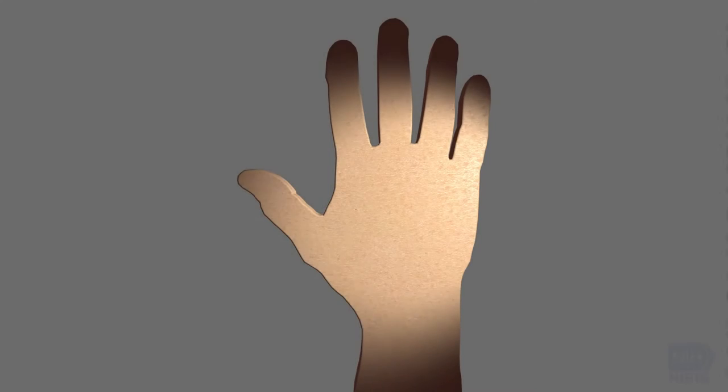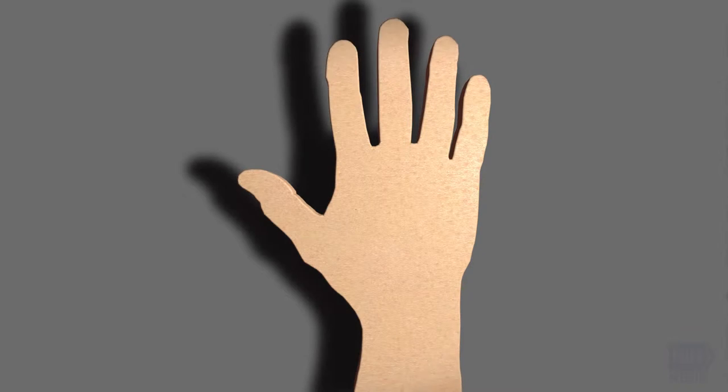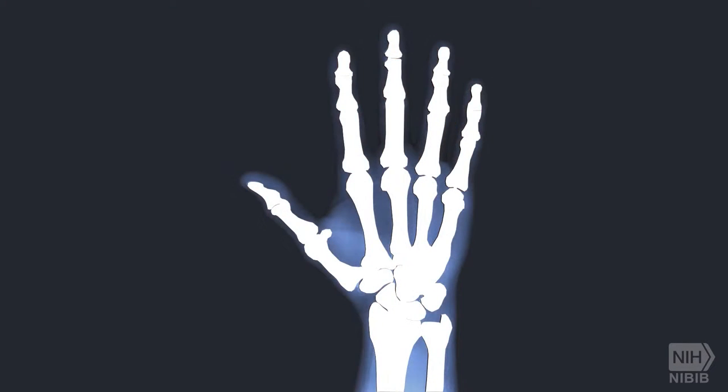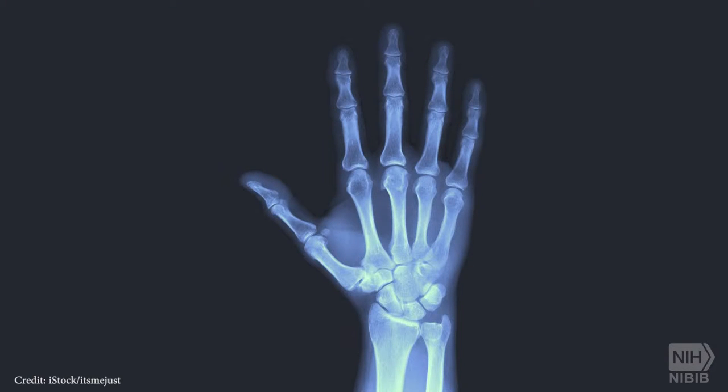If you place your hand in front of a flashlight, it will cast a shadow on the wall behind it. In a similar manner, x-rays directed at the body produce shadows on the opposite side that can be registered on film or on a digital sensor.